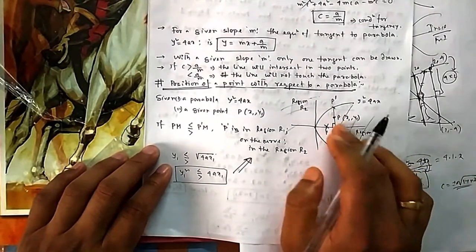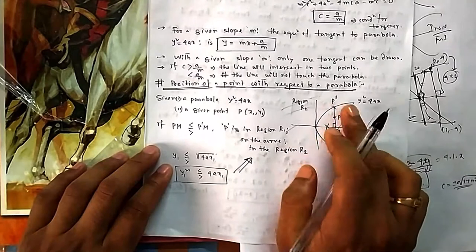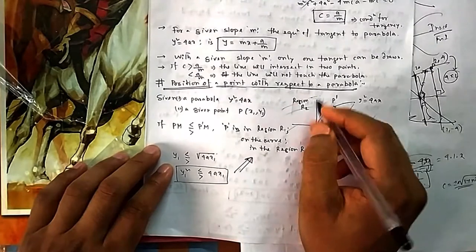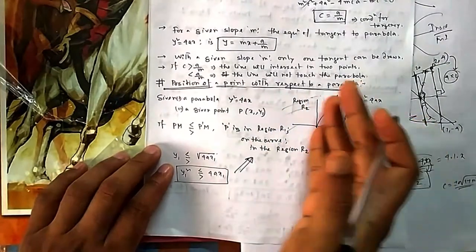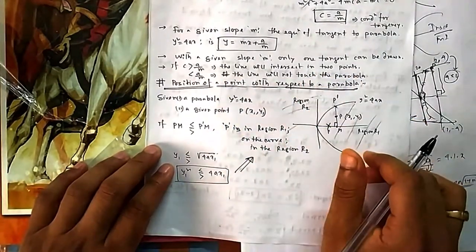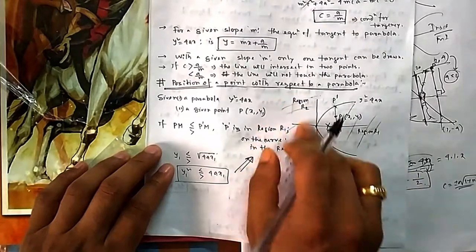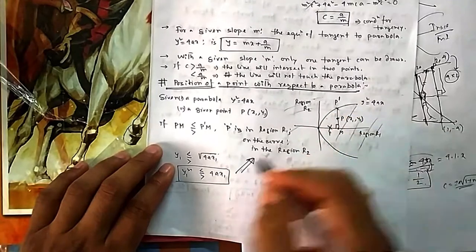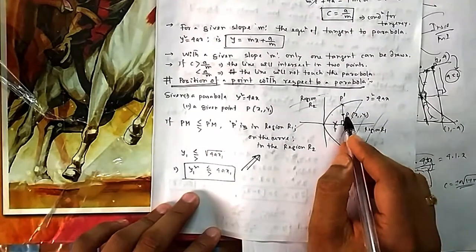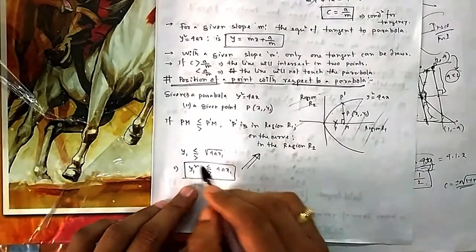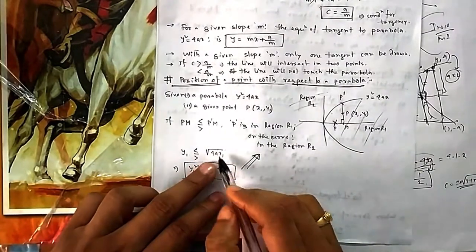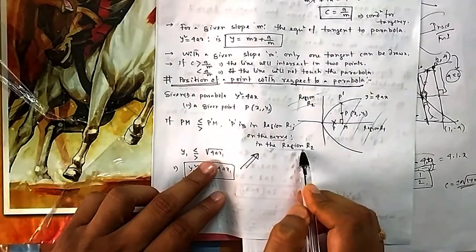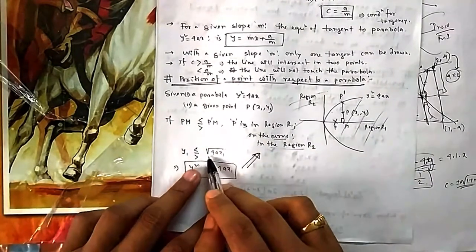The confusion arises when the point is near the parabola and you need to check if it's inside or outside. If the point is on the left side, that is obviously Region 2 since x is negative and the curve is not there. For the right side, apply the condition: if PM < P'M, it is Region 1; if equal, it's on the curve; if greater, it's in Region 2.